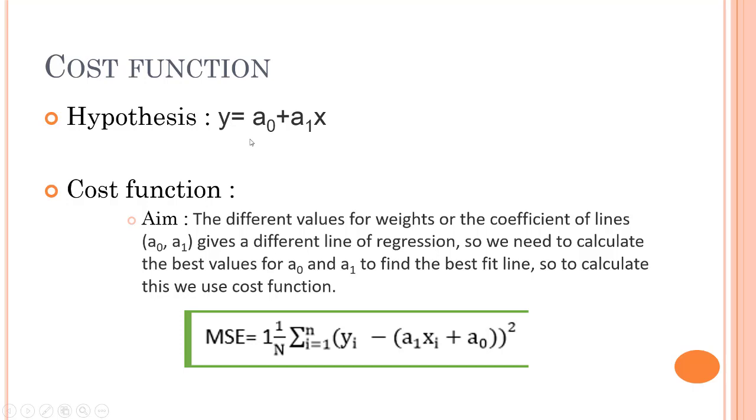The hypothesis that we have is y = a0 + a1*x. Again, this is y is also f(x). The cost function helps us with the different values for weights or the coefficient. The different values of the coefficient of lines gives a different line of regression, so we need to calculate the best value for a0 and a1 to find the best fit line.